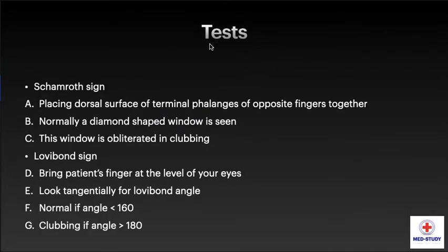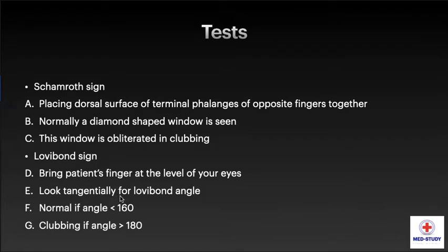Now, tests to see clubbing. The first is the Schamroth sign — placing the dorsal surface of terminal phalanges of opposite fingers together. Normally we see a diamond-shaped window, but this window is obliterated in clubbing. The Lovibond sign requires bringing the patient's finger to the level of our eyes and looking tangentially for the Lovibond angle. It is normal if the angle is less than 160 degrees and indicates clubbing if the angle is more than 180 degrees.